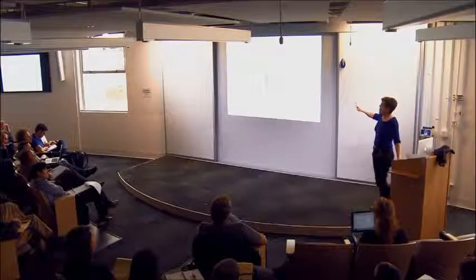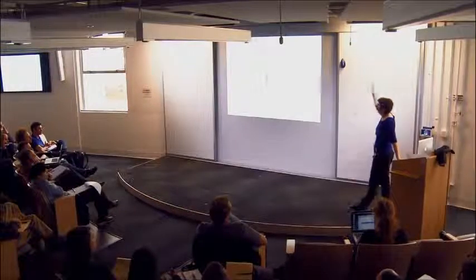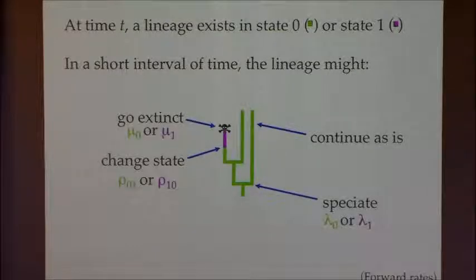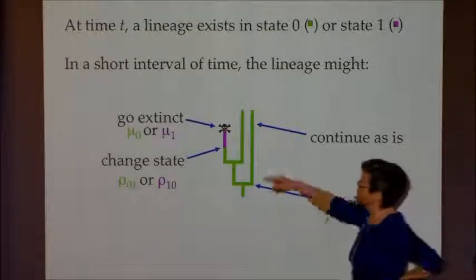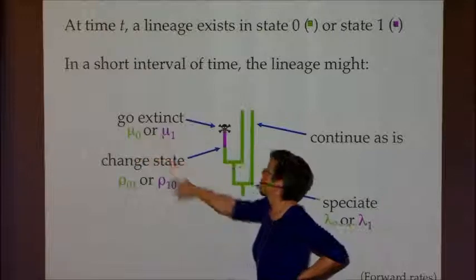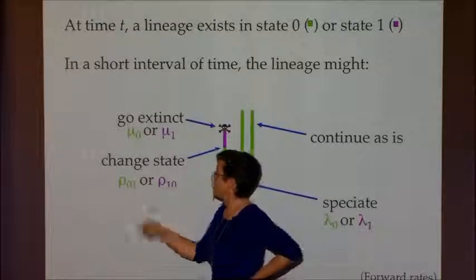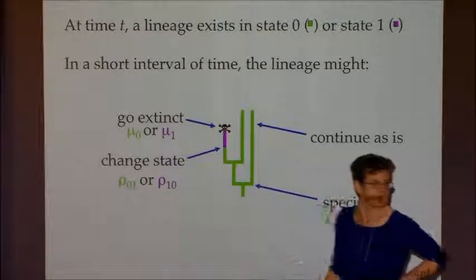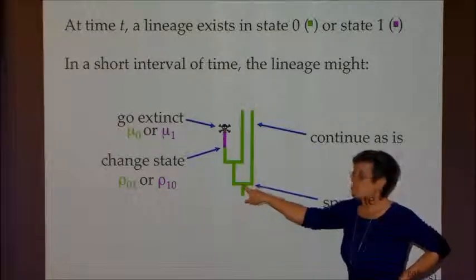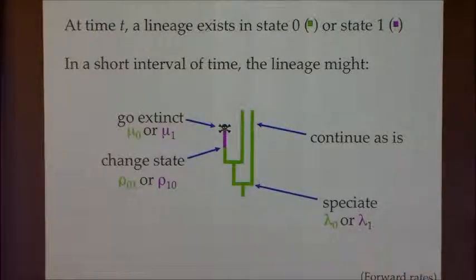The model I'm going to take us through is a multi-state branching process, asking what can happen over a period of time along a tree. There are several processes with parameters for each: the lineage could go extinct, with extinction rate mu depending on the state; there can be transitions from state 0 to 1 — say from sexual to asexual or vice versa; there can be speciation events, which cause the nodes in our tree; or the lineage can continue as is. These are all forward-time rates.